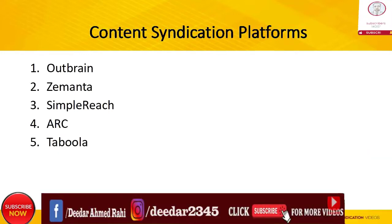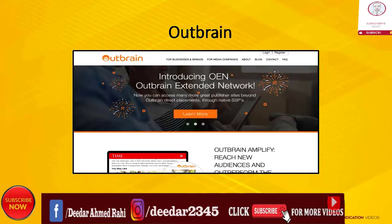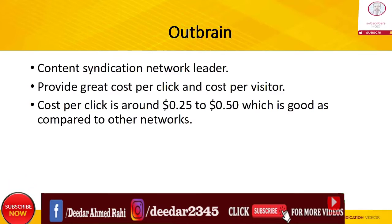First up is Outbrain. Outbrain is one of the content syndication network leaders. They provide great cost-per-click or cost-per-visitor for users. Usually, their cost-per-click is around $0.25 to $0.50, which is quite good as compared to other networks.